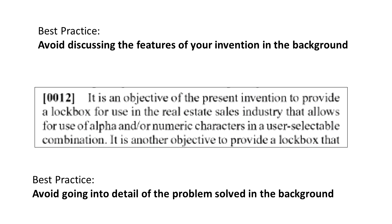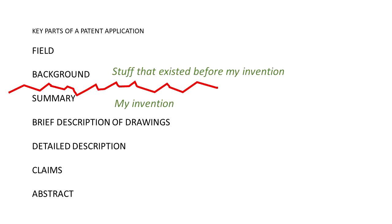Best practice: avoid discussing the features of your invention in the background. And even better, avoid discussing details of the problem being solved in the background. In this case, I don't want to say in my background that we need to have a user-selectable combination — let's save that for a different section. In the background we could state something like: lockboxes are commonly used in real estate, there are various techniques for securing the box and the key within it, and it's desirable to have improvements in lockboxes. Keep it somewhat vague and general — that should be sufficient for the examiner to understand the context.